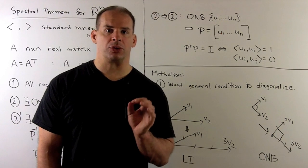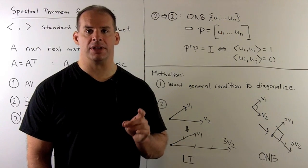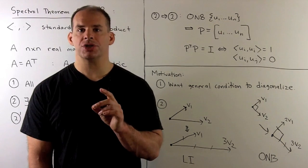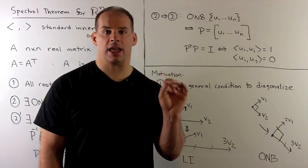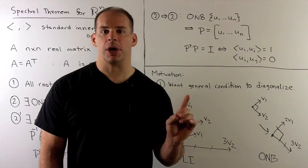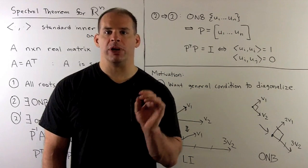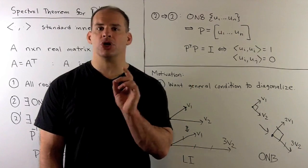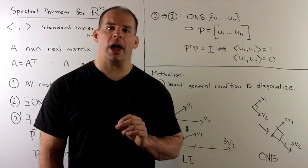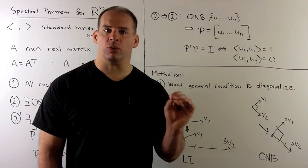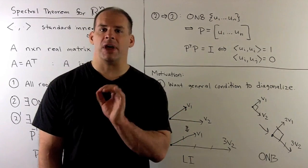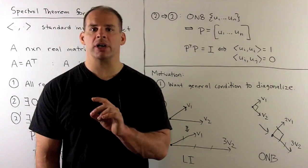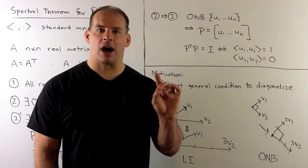The spectral theorem has big applications in math and physics. For here, we'll note some immediate advantages. First, we have a condition for diagonalizability: if A is real symmetric, then we can automatically put A in diagonal form. We can't do that for a general real matrix — two things get in the way: the eigenvalues might not all be real, and even if they are, we might not find a basis of eigenvectors. When A is real symmetric, the spectral theorem guarantees both conditions.